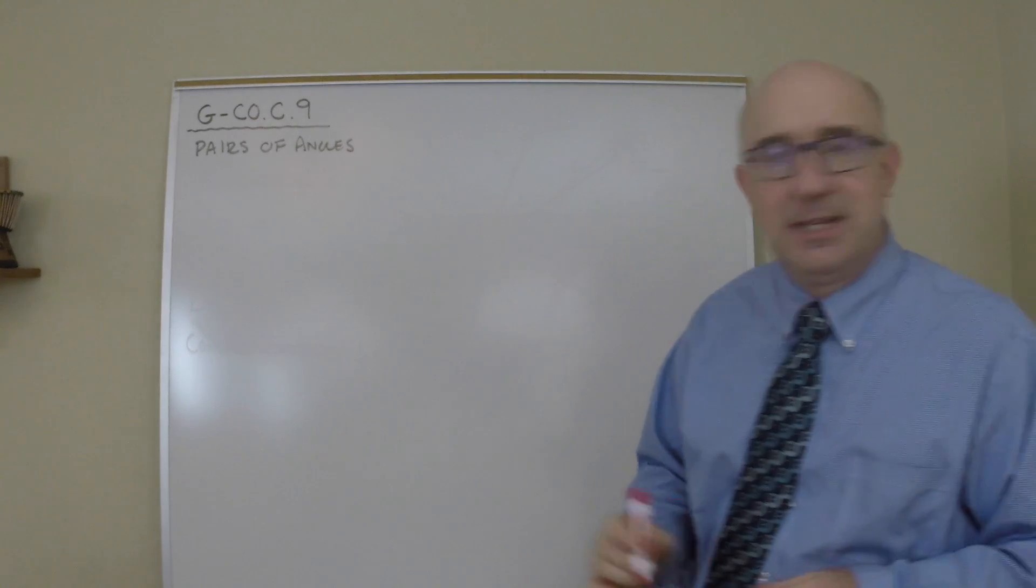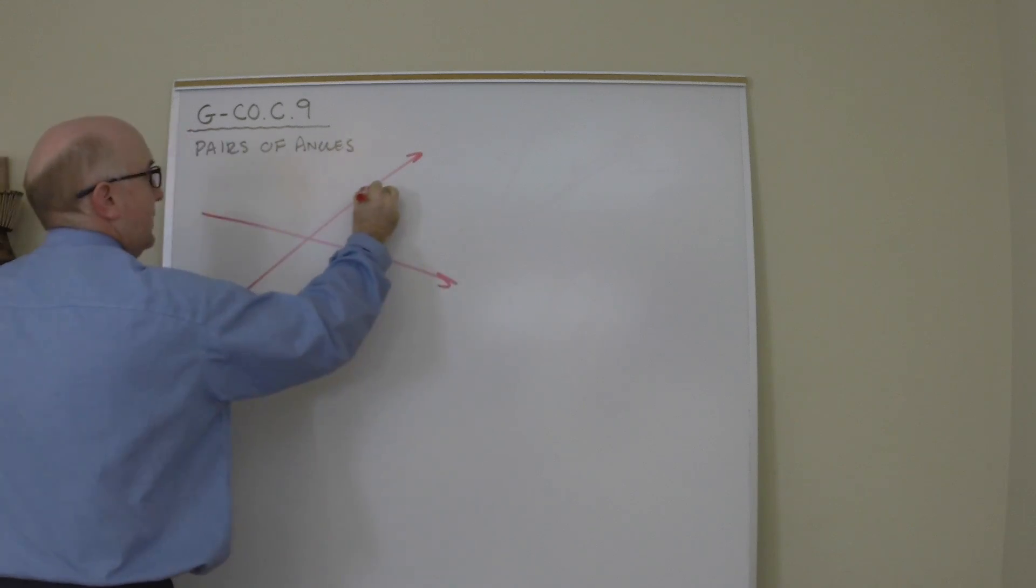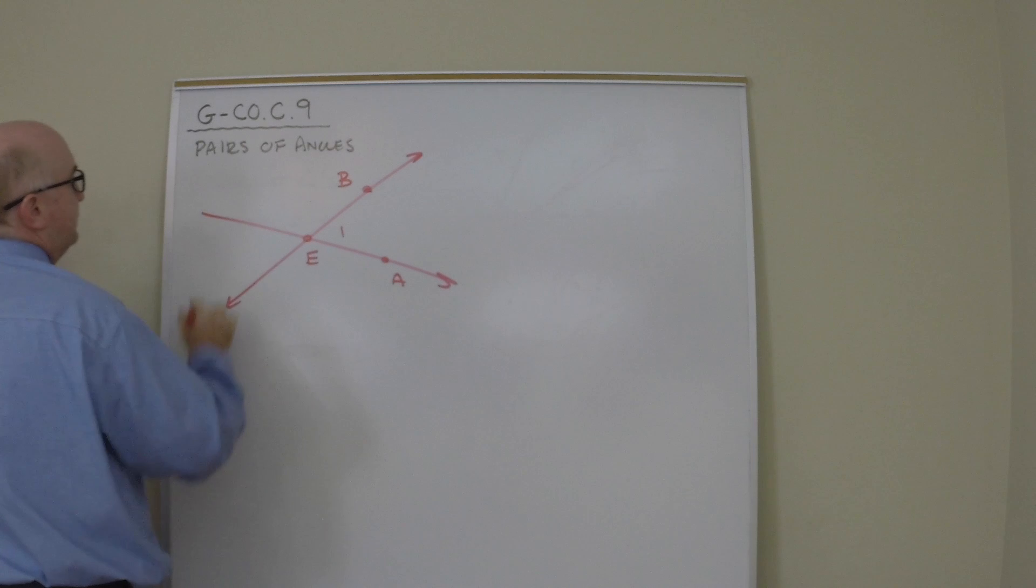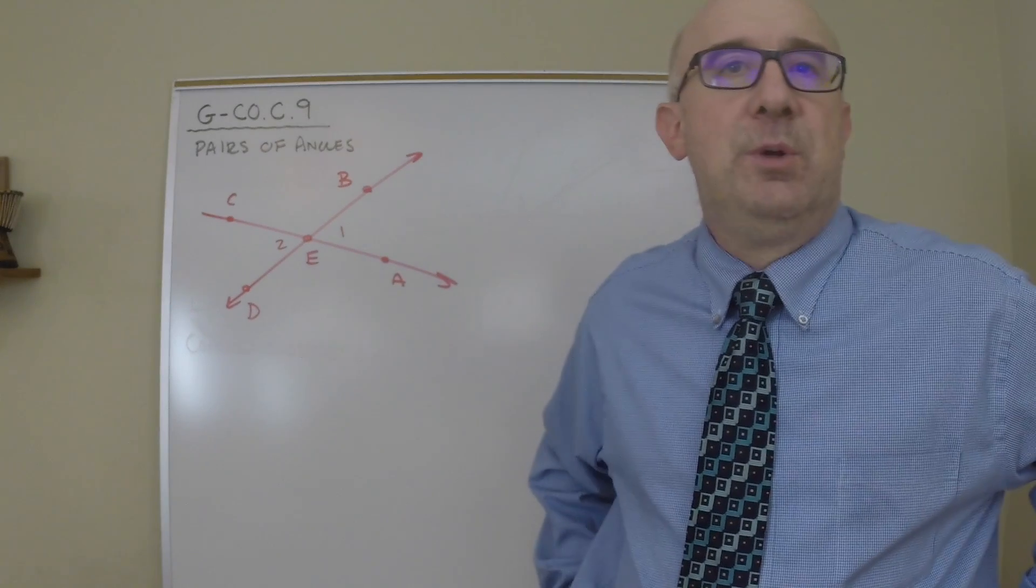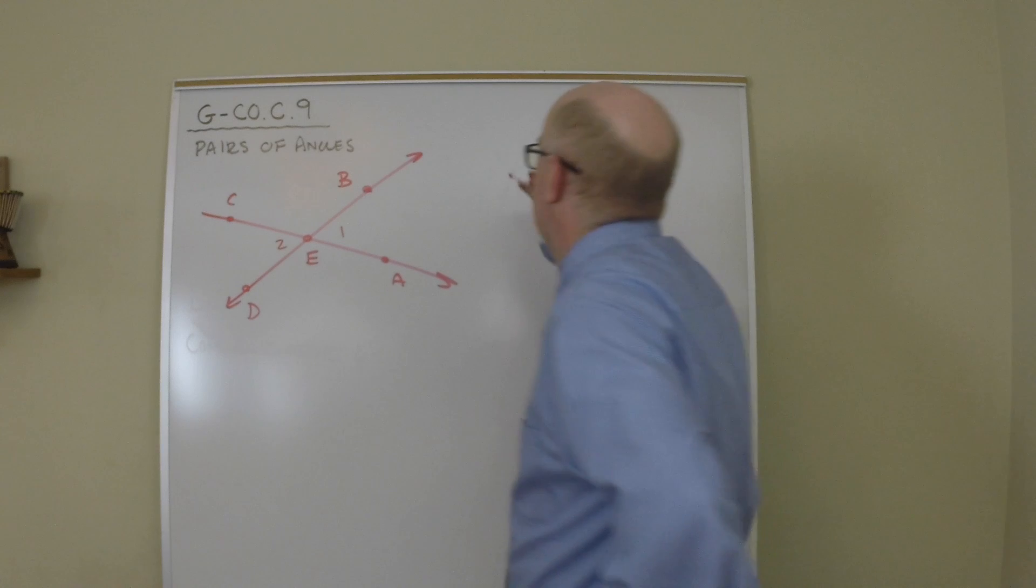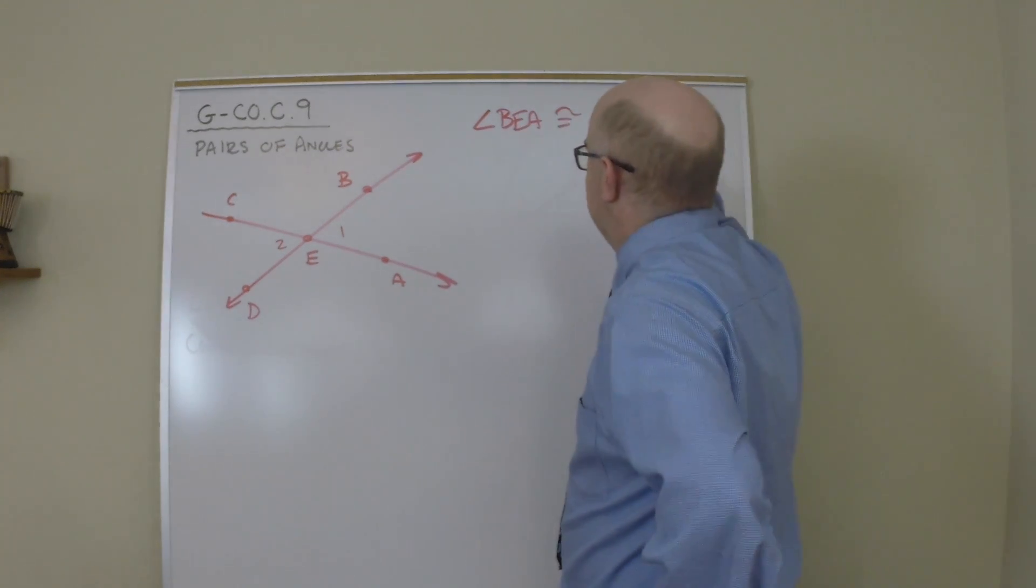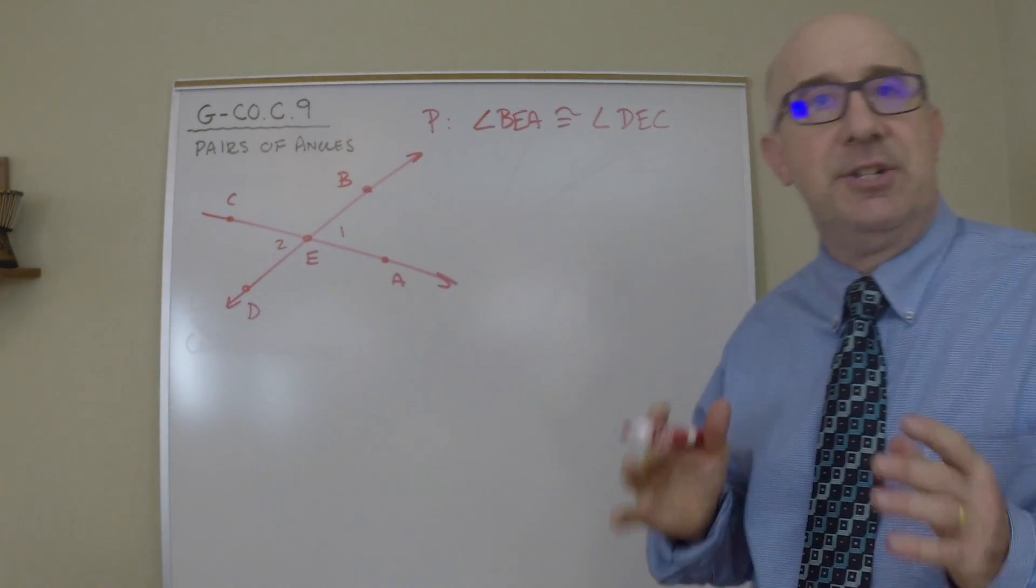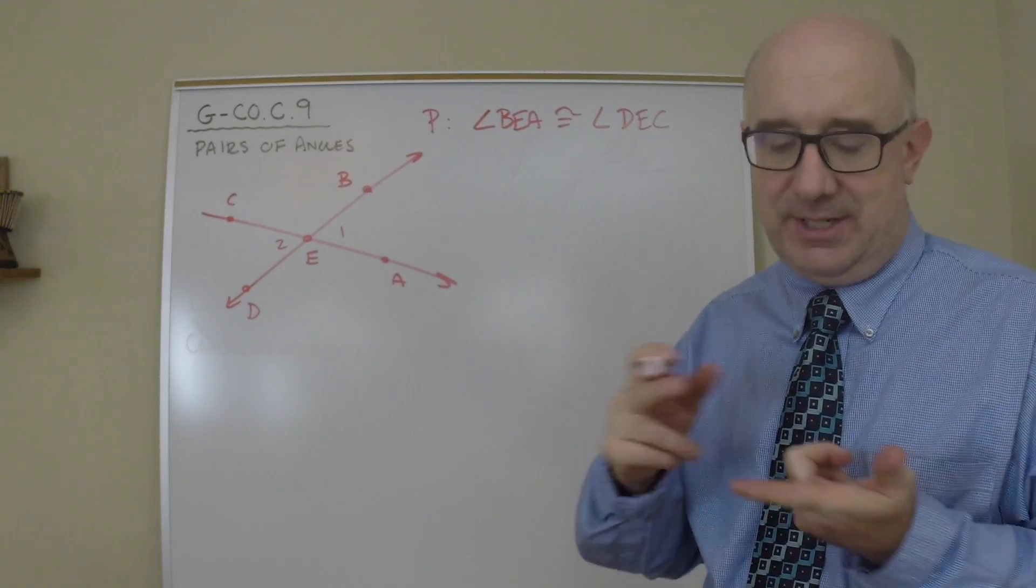A student quite easily can look at two lines that intersect and tell me that they think that angle BEA, this angle here, angle 1, might be congruent to angle CED, angle 2. Angle 1 and angle 2 are vertical angles. And we want to maybe make a conjecture that we think angle BEA is congruent to angle DEC. This is what we are going to conjecture, that vertical angles, non-adjacent angles formed by intersecting lines are actually congruent to each other. A conjecture. That's a guess or a hypothesis.